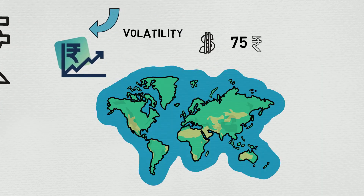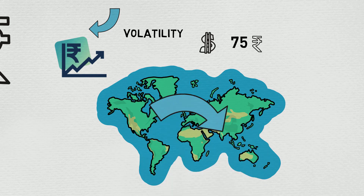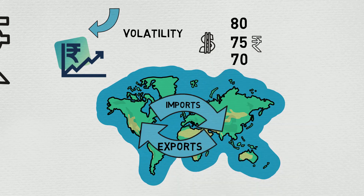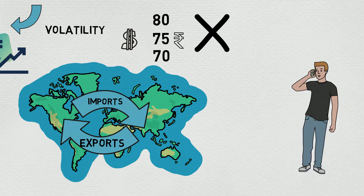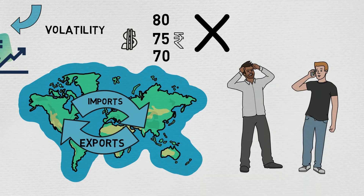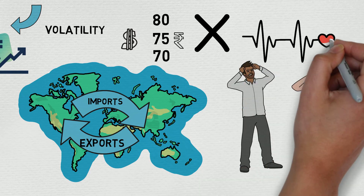On one day it may be 75; when imports increase it may become 80, and when exports increase it may become 70. Such fluctuations are not good for the economy. Won't you feel cheated if your friend buys an iPhone for 1 lakh rupees when the rupee was strong, but now you have to pay 1.5 lakh rupees because the rupee got weaker? Having stability in prices is good for the overall health of the economy.